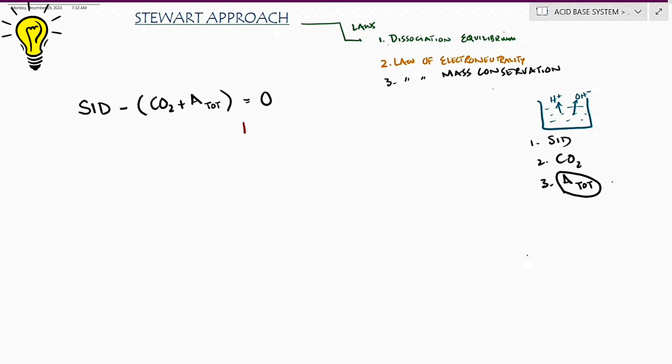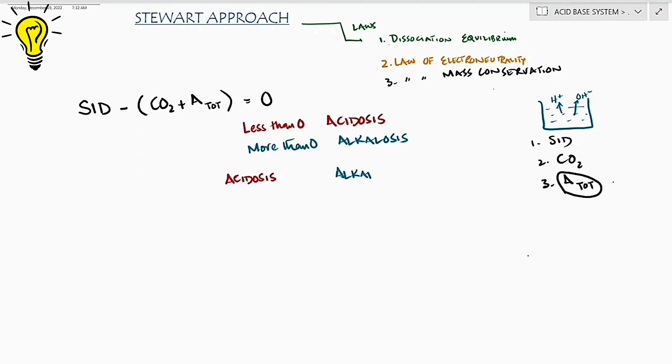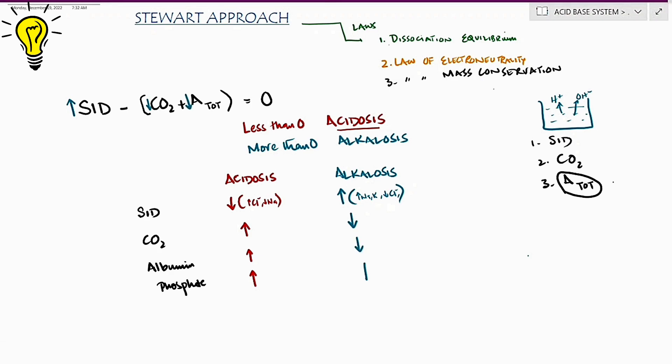If the sum is in minus, it is acidosis. If the sum is positive, it is alkalosis. So for acidosis to happen, it happens if there is decrease in strong ion difference or increase in albumin or phosphate, albumin and phosphate being the weak acids. On the contrary, alkalosis happens if there is increase in strong ion difference or a decrease in carbon dioxide or a decrease in weak acids.